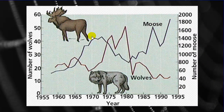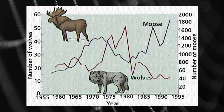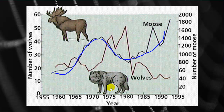We'll use the example of moose and wolves to show how predators determine the size of the prey population, and how prey can determine the size of the predator population. This is a real, historical case study with lots of data. Looking at the moose population, it starts low, then climbs, then gets lower, then climbs again — and that's because of the wolf population.